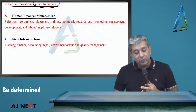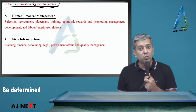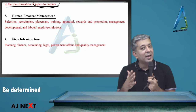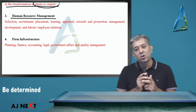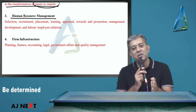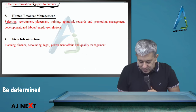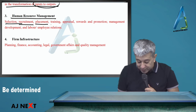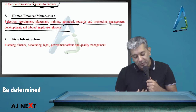Human resource management: no company will be able to become big without proper skilled workers — trained people, knowledgeable people. Ek IT company bhi hai, usko log chahiye. Aaj kal bahot sara coding automatic ho jata hai, lekin new things keep coming out — unless and until you have the right people for it, how will you become better than others? This covers selection, recruitment, placement, training, appraisal, rewards and promotions, management development and labor relations.